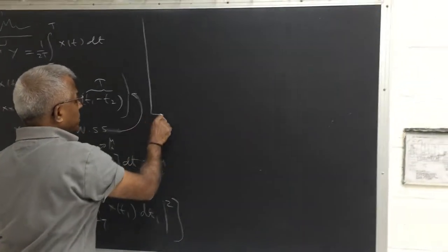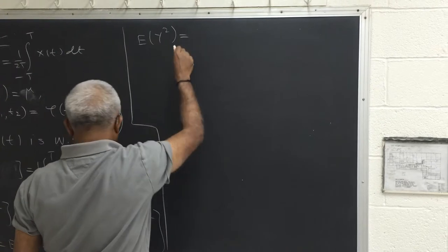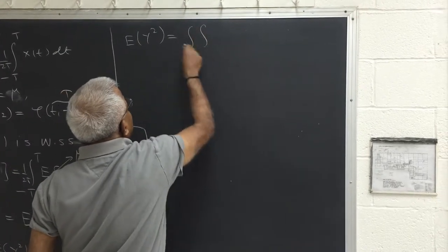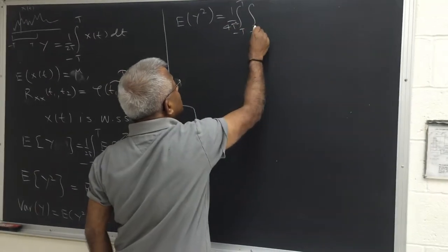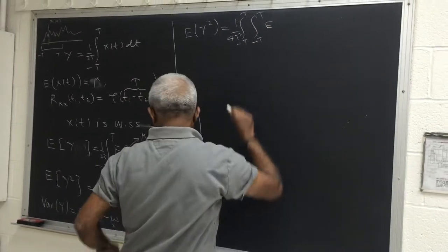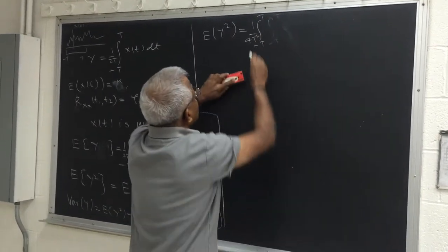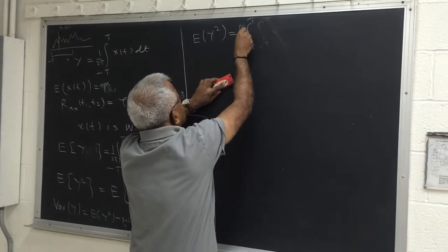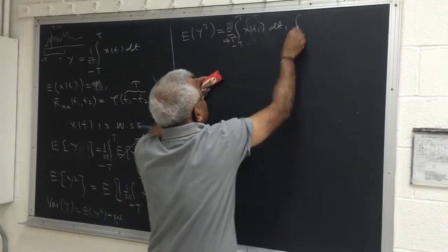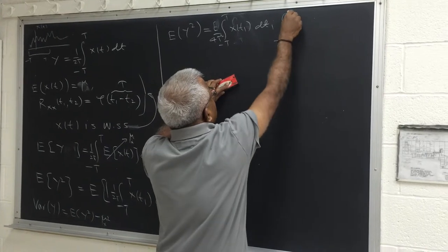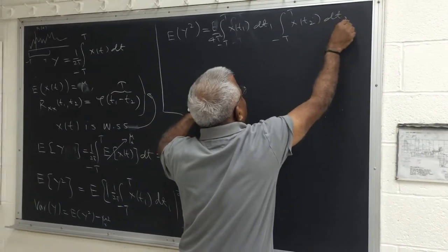So if I pick this up here, we have expected value of y squared. You have two integrals, so 1 over 4t squared, minus t to t, minus t to t. The expected value should be written here. So the first integral is x of t1 dt1, and you have another integral minus t to t, x of t2 dt2. If it is complex, you have the conjugate also.